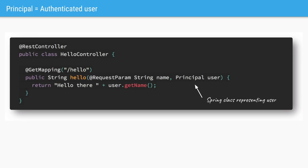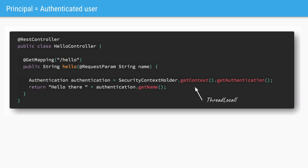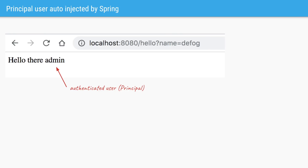Spring Boot Security also has a feature where you can add a Principal to your MVC methods. This object represents the authenticated user who is calling that particular URL. In our case we'll take that user instead of the request parameter name, and it's Spring's responsibility to inject this Principal based on which user has logged in. You can also achieve the same behavior using the ThreadLocal of SecurityContextHolder to get the authenticated user. When we restart the server and try the URL, logging in as admin, it returns 'hello there admin' instead of the request parameter — one way to personalize responses based on which user is accessing the URL.